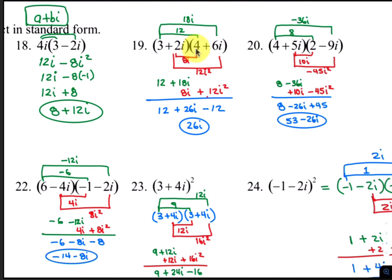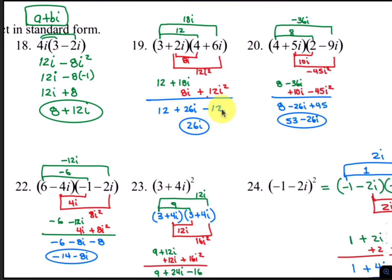For number 19, we'll distribute using the FOIL method. 3 times 4 is 12. 3 times 6i is 18i. 2i times 4 is 8i. And 2i times 6i is 12i squared. 12 comes down, 18i plus 8i combines to make 26i, and 12i squared becomes negative 12. 12 plus negative 12 adds up to 0, so those cancel, and your final answer is just 26i.